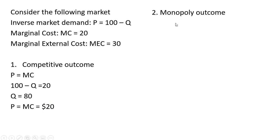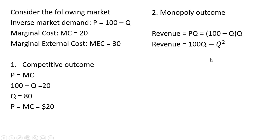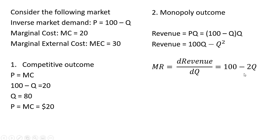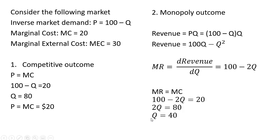Now let's look at the monopoly outcome. We get the monopolist's revenue: price times quantity equals (100 minus Q) times Q. Simplifying and taking the derivative with respect to Q gives marginal revenue of 100 minus 2Q. Setting marginal revenue equal to marginal cost and solving, the monopolist produces 40 units at a price of $60 per unit, plugging 40 back into the inverse market demand.